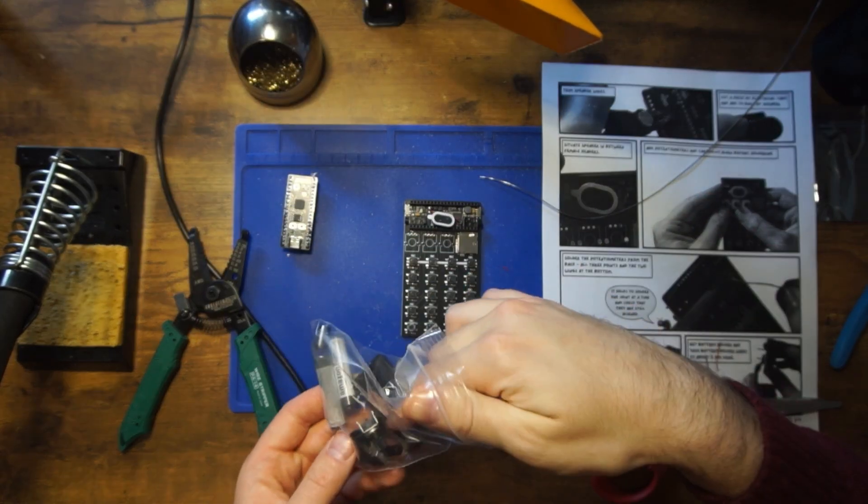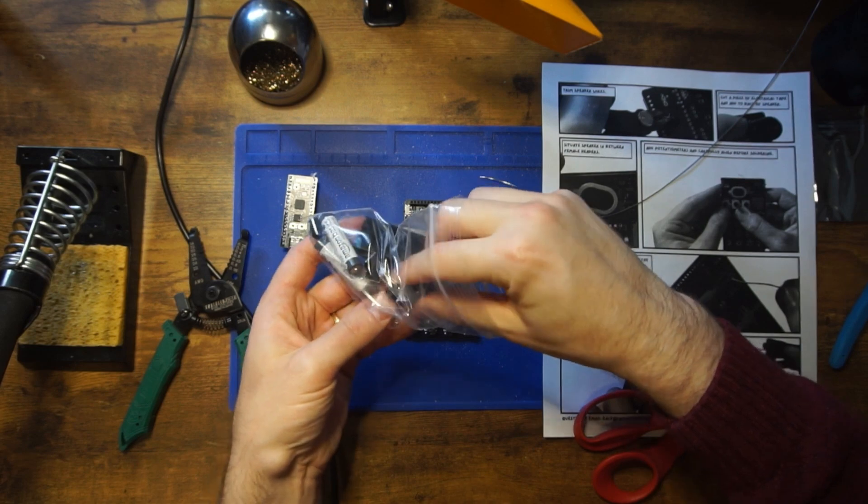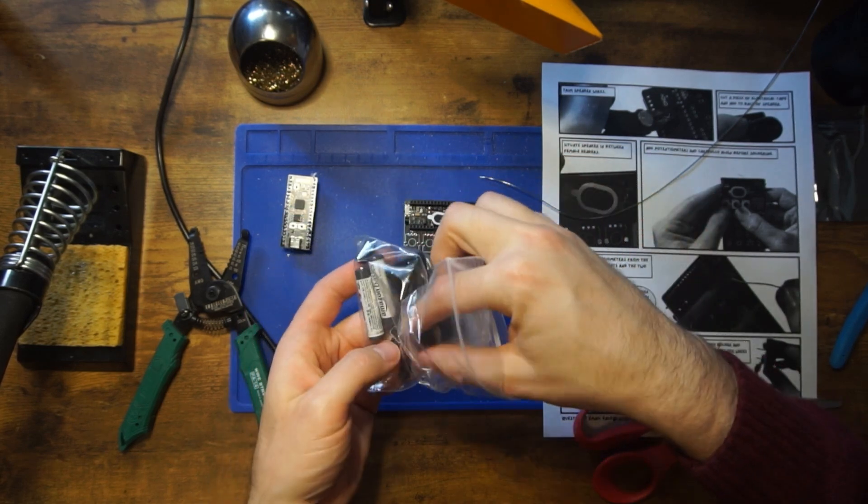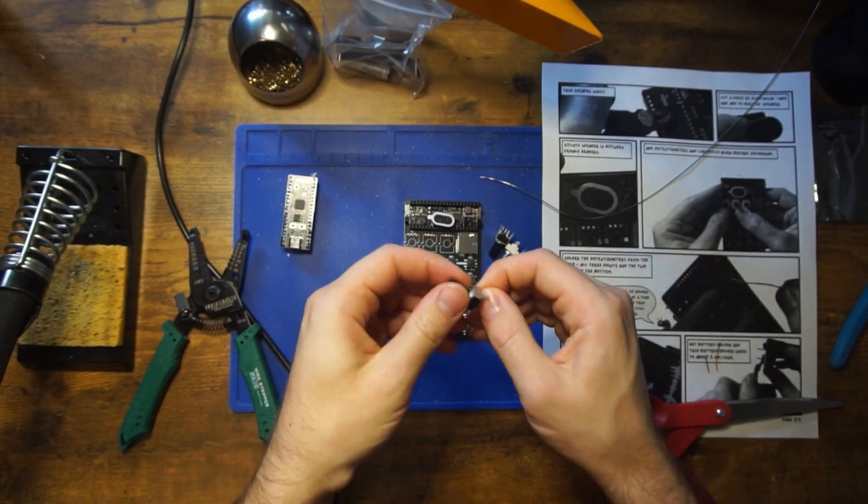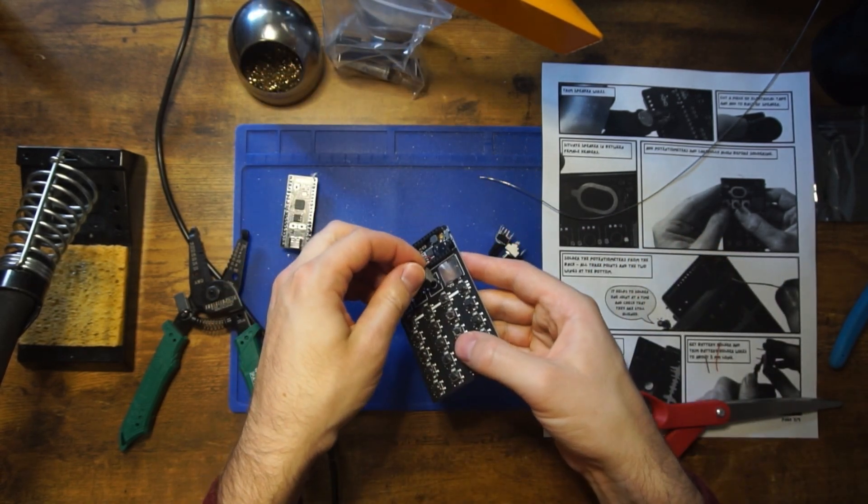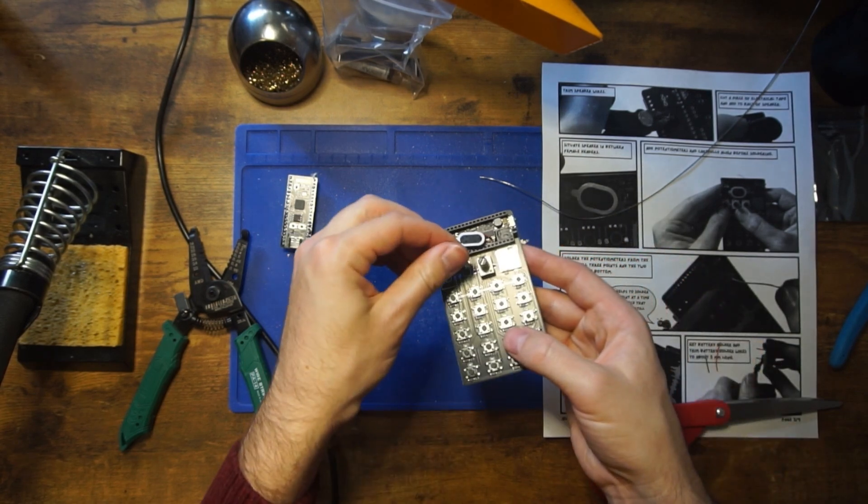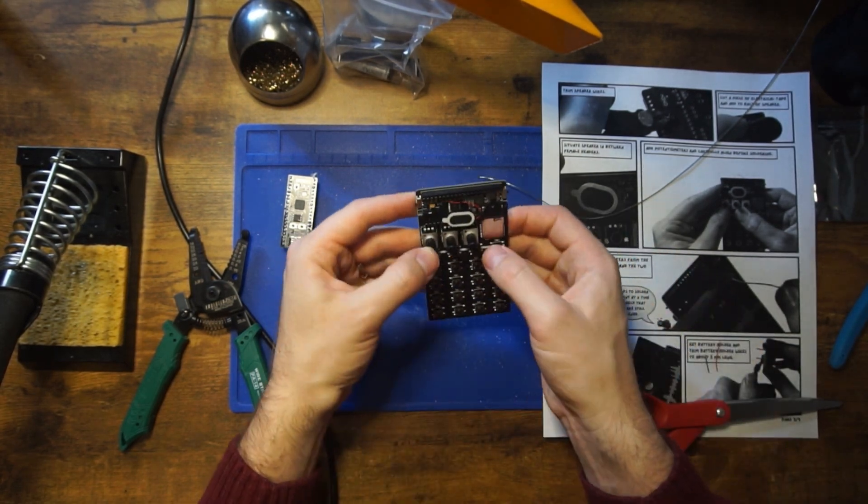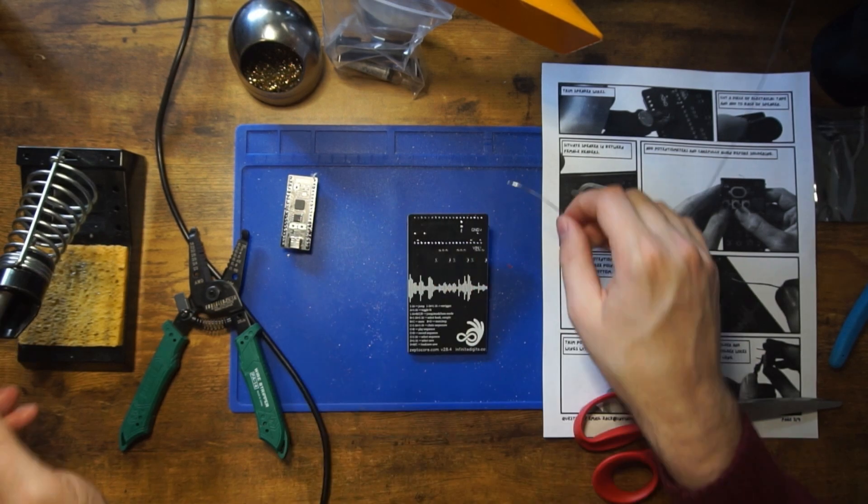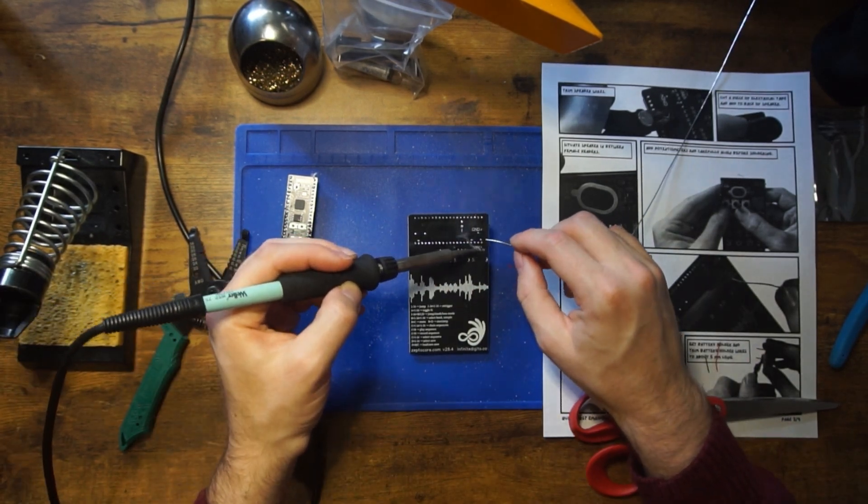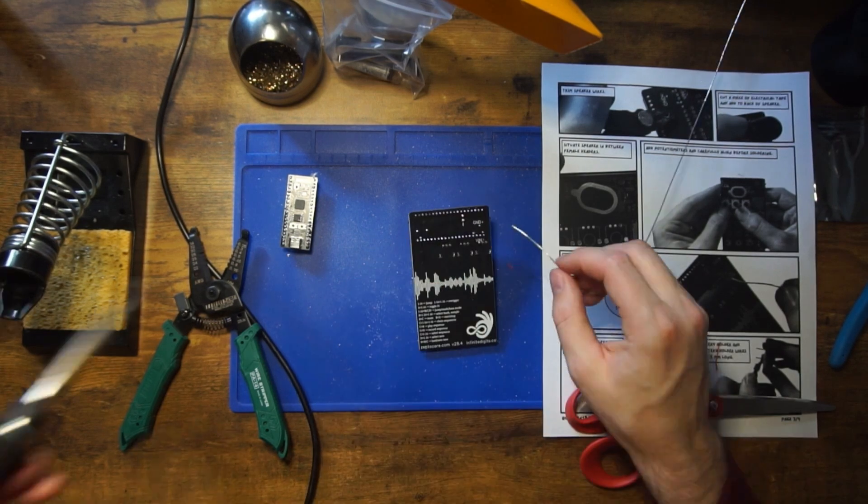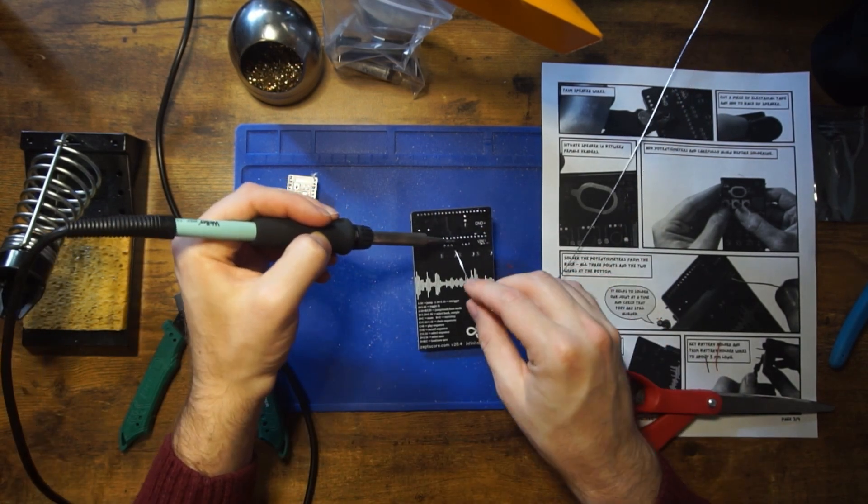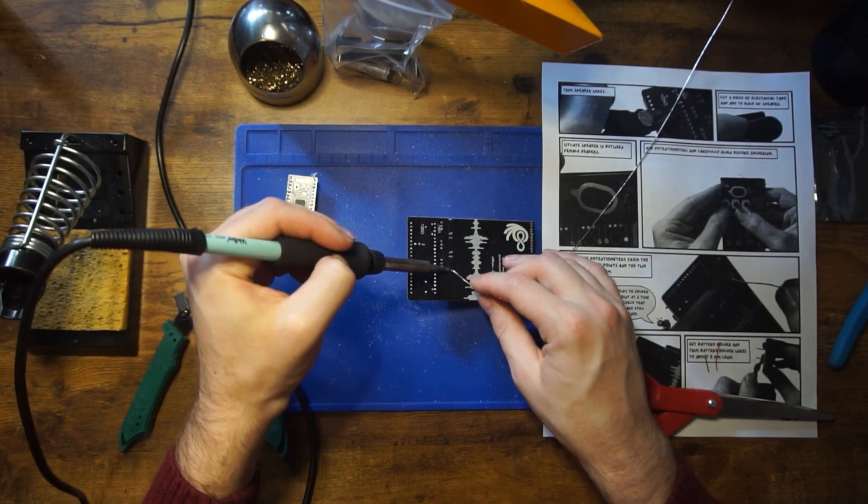Now we're going to grab the three potentiometers. Check the legs that they're aligned. They may have gotten bent in transit. Go ahead and put all three in at the same time. Now here you kind of want to make sure that they're aligned before you start soldering. Solder just one leg at a time here. Check to see if it's still aligned. Move them if necessary. And then go ahead and solder the rest of the legs of all of the potentiometers. This will help keep them aligned.